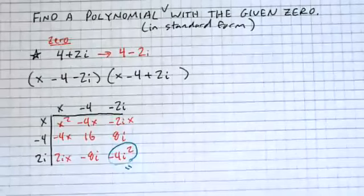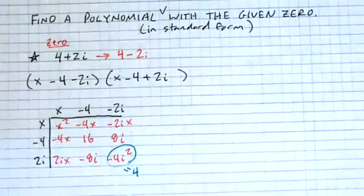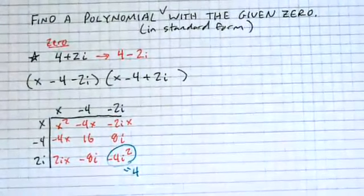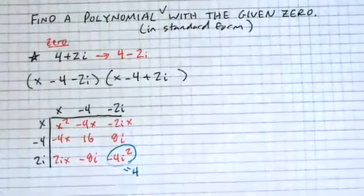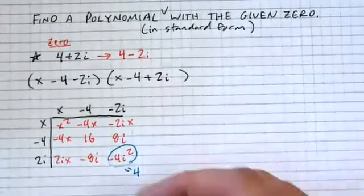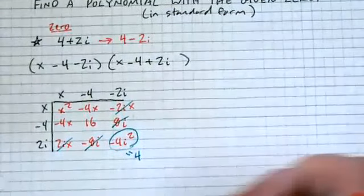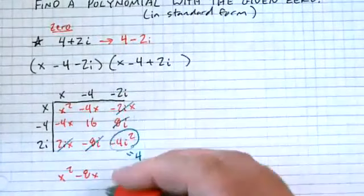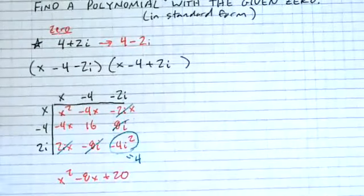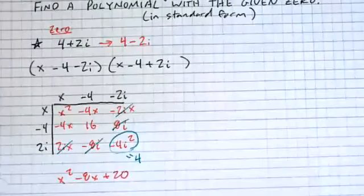When we end up with those i-squareds, I like to rewrite them. Remind me — what's i-squared again? Negative one. And negative four i-squared would be negative four times negative one, which is just a four. One of the pros of doing it this way is you're going to get stuff that cancels. You're always going to get stuff that cancels — that's why the shortcut exists. We got a positive 2i and a negative 2i, a negative 8i and a positive 8i. Put everything else together: we get x-squared, negative 8x, and that 16 and that 4 come together to give us 20. The 8i's cancel.